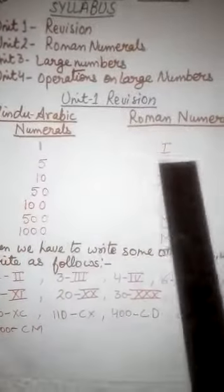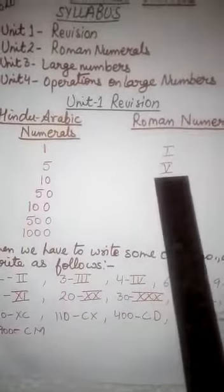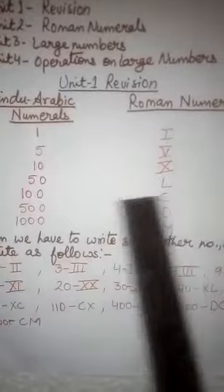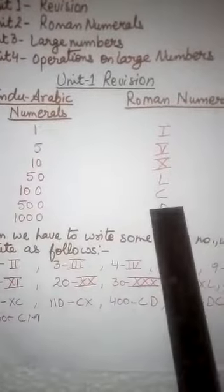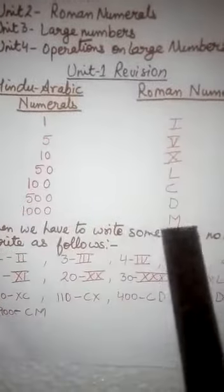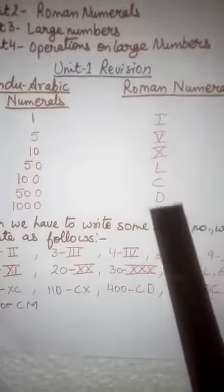1 as I, 5 as V, 10 as X, 50 as L, 100 as C, 500 as D and 1000 as M. These are the 7 symbols.